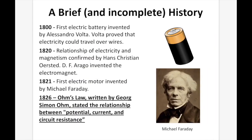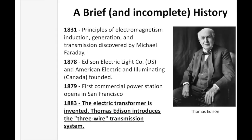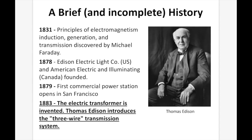The first battery was invented in 1800 by Volta. He proved that electricity could travel over wires. In 1820, Hans Christian Ørsted confirmed that there's a relationship between electricity and magnetism, and Arago invented the electromagnet. In 1821, Michael Faraday invented the first electric motor. In 1826, George Simon Ohm wrote Ohm's Law, which stated the relationship between potential, current, and circuit resistance. In 1831, Michael Faraday developed the principles of electromagnetism, induction, generation, and transmission.